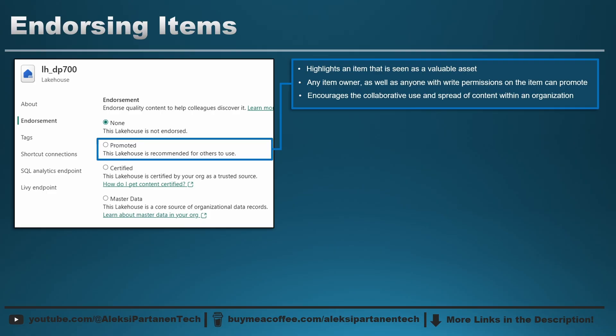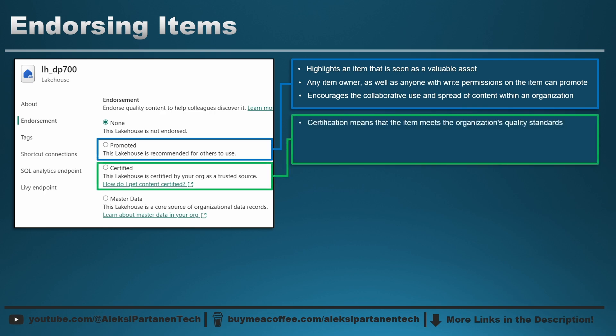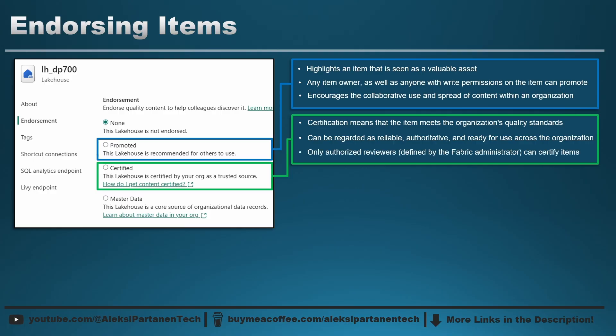Next we have certified endorsement. This is a step up from promoted and means the item meets organizational quality standards. Each organization defines its own rules for what counts as certified content. When an item has been certified, it is typically regarded as reliable, authoritative, and ready for use across the organization. This endorsement is not available for everybody by default — Fabric admins can manage the certification process and specify who is able to certify items.